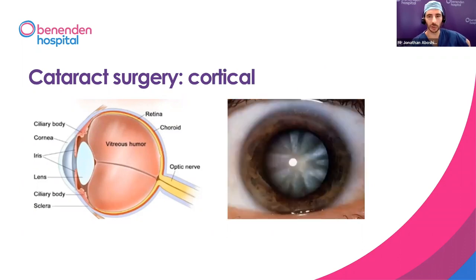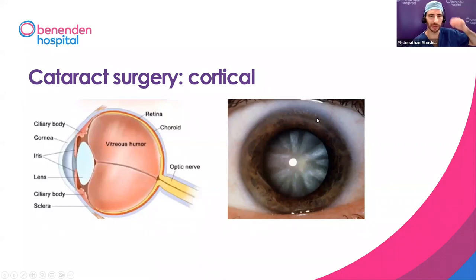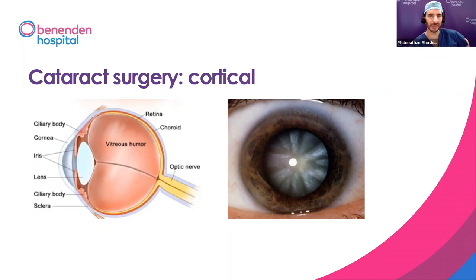Another common type of cataract is cortical. You can see these little spokes — a bit like spokes on a bicycle wheel. That's the part of the cataract called the cortex, which is outside the middle part called the nucleus. The reason these develop in different ways is still not very well known. We know there are certain risks like some medications and sunlight, but the main risk factor is just getting older. Some people get a lot of cortical cataract; some get a lot of nuclear sclerosis. We don't really know why some people get certain types and others get other types.